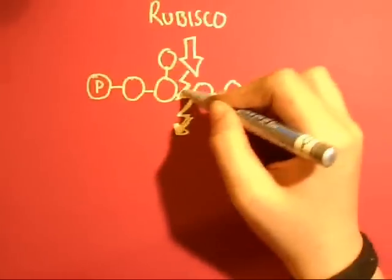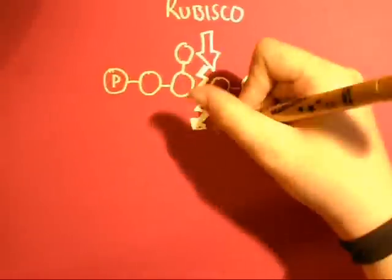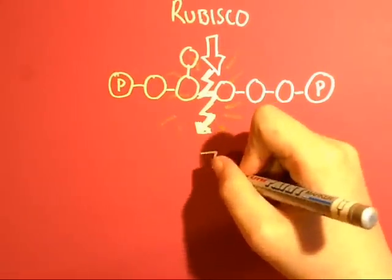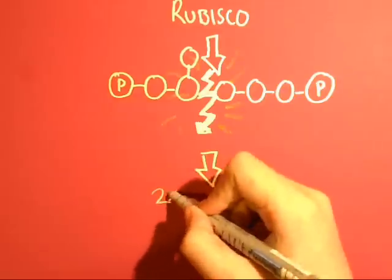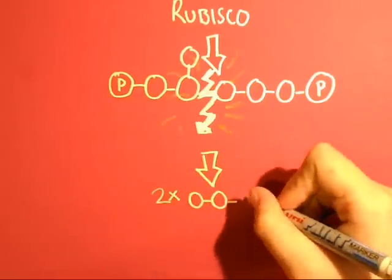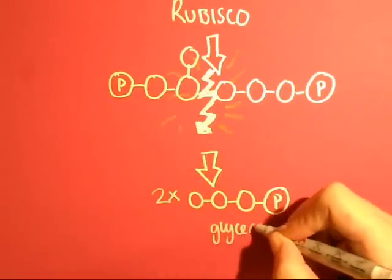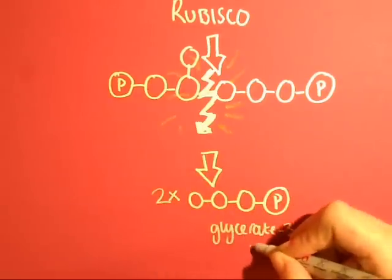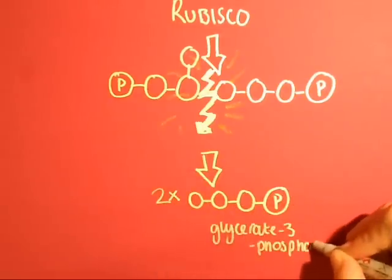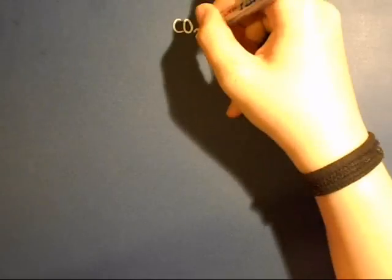it catalyses it. Then it forms a six carbon intermediate — it's unstable, breaks down like G3P. Glycerate 3-phosphate.